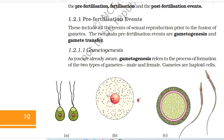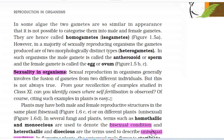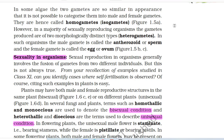Gametogenesis refers to the process of formation of the two types of gametes — male and female. Gametes are haploid cells. In some algae, the two gametes are so similar in appearance that it is not possible to categorize them as male and female gametes; they are hence called homogametes or isogametes. However, in a majority of sexually reproducing organisms, the gametes produced are of two morphologically distinct types, i.e. heterogametes. In such organisms, the male gamete is called the antherozoid or sperm, and the female gamete is called the egg or ovum.